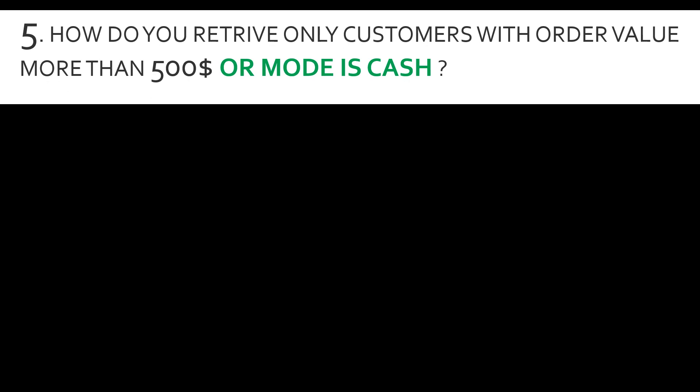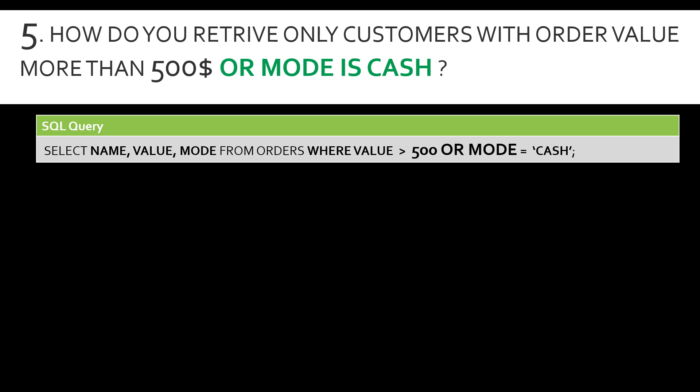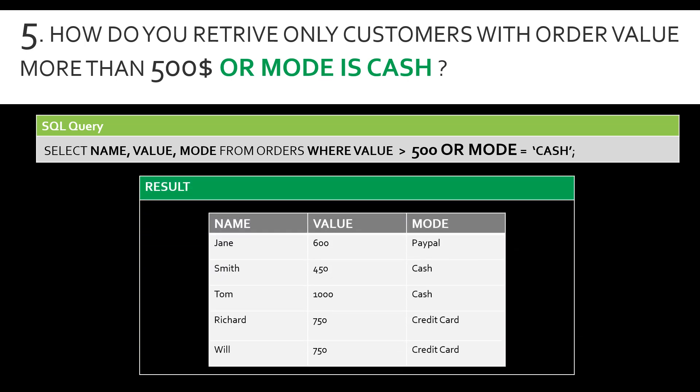Question number five: how do you retrieve only customers with an order value more than 500 or whose payment mode is cash? Here the conditionality is either/or. The query uses WHERE value > 500 OR mode = 'cash'. The result returns five rows. Notably, customer Smith — even though his order value is 450, which is less than 500 — is included because his payment mode is cash.